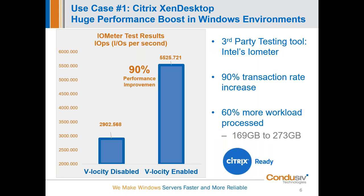Here's the first use case — this is actually some of the testing we did for our Citrix Ready certification. You can see that the data transaction increased by 90 percent, and we had 60 percent more workload processed in the same amount of time. We used a third-party tool for this benchmarking — Intel's Iometer tool — so these metrics are directly from that third-party tool.